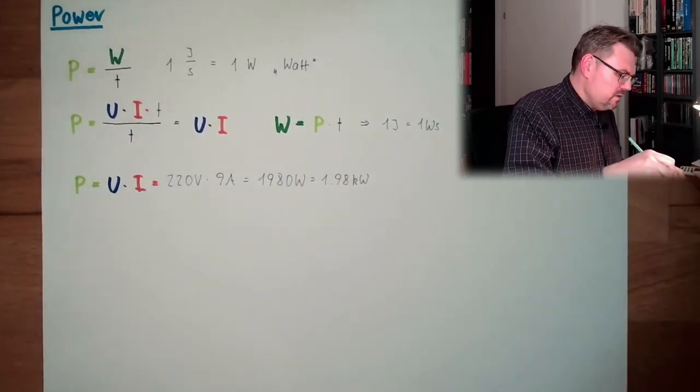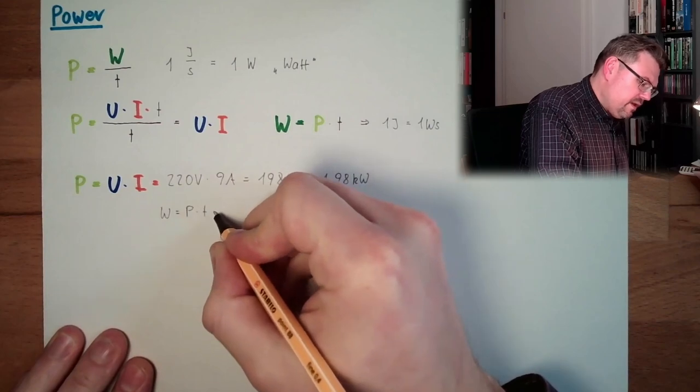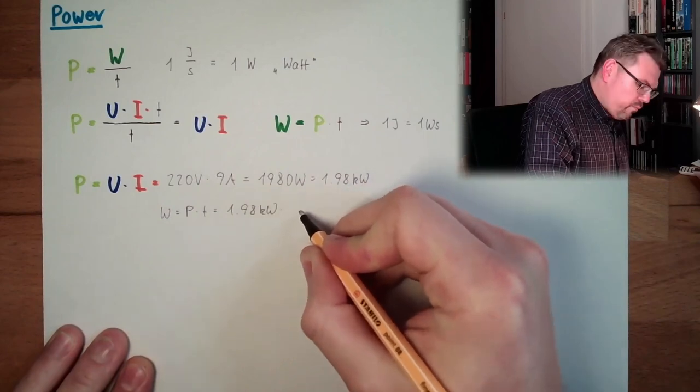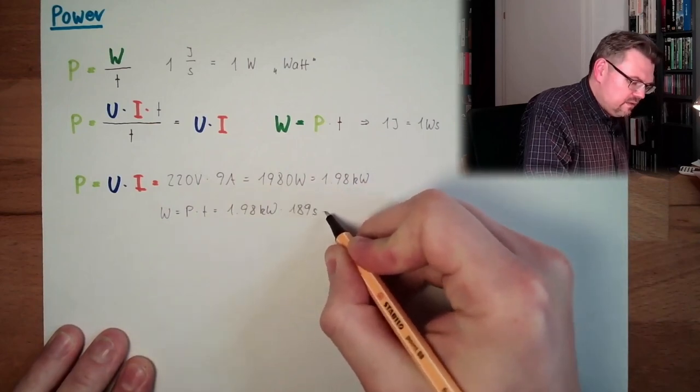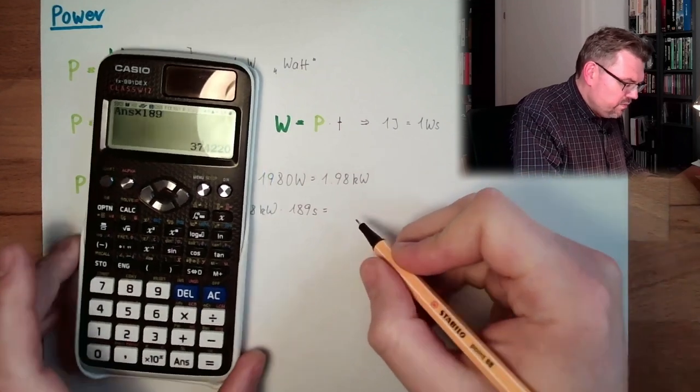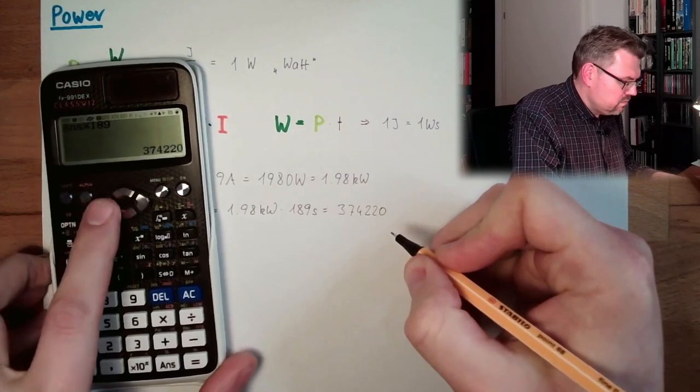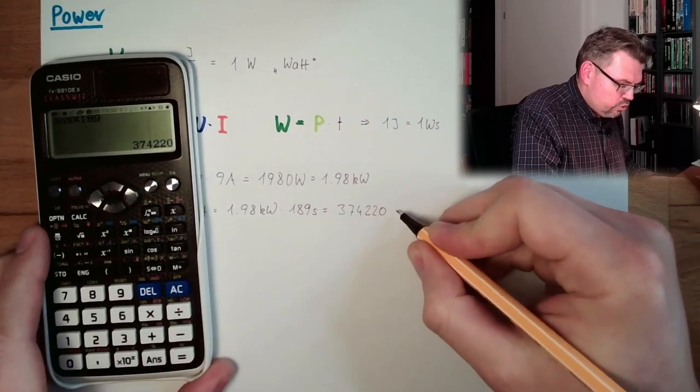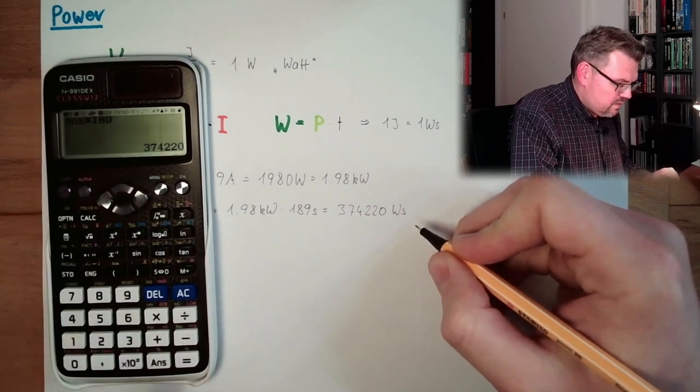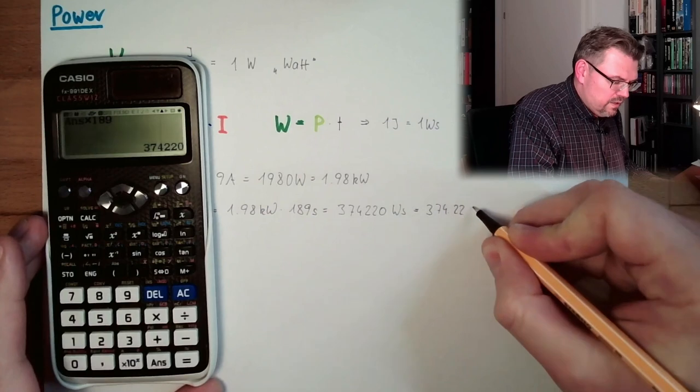So, the work which we were producing, I will write it here. Work is P multiplied by T. And we have this 1.98 kilowatts multiplied by 189 seconds. We consumed 374.220 joules. That's watt seconds. Watt seconds.